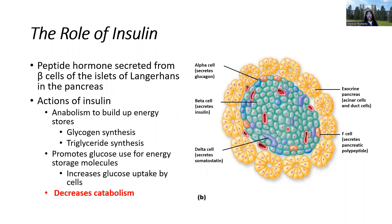Insulin turns glucose into glycogen and triglycerides, promotes glucose uptake for immediate use, and encourages storage of glucose into glycogen and triglycerides. It also decreases catabolism — not only increasing anabolic effects (building up and storing) but also blocking catabolic effects. This is why in an excess insulin state it's very hard to break down fats: insulin is blocking that catabolic effect.